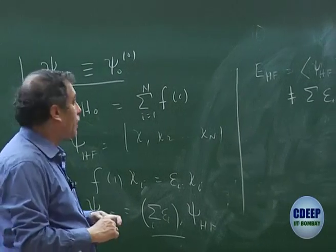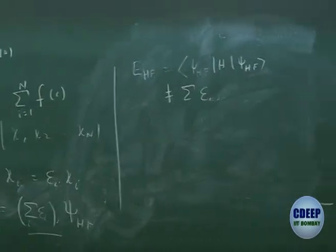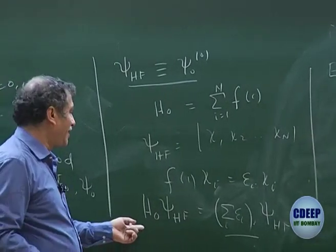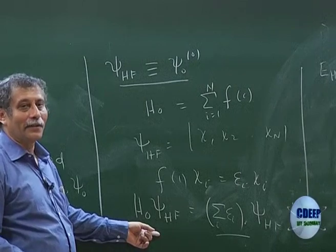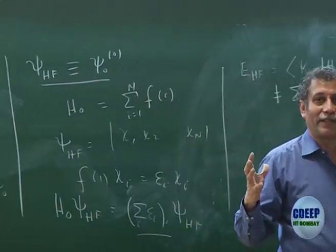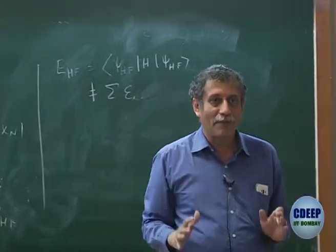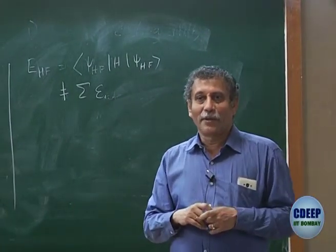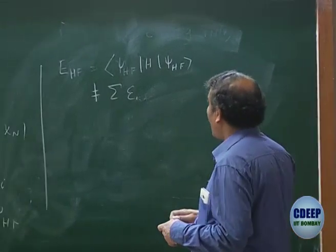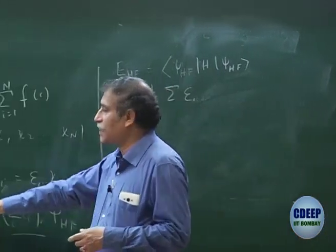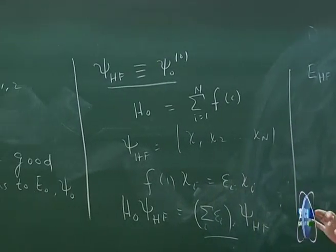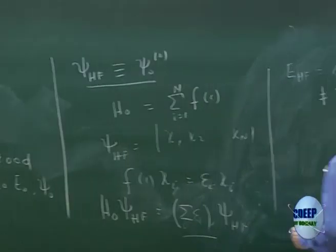So this is something that you must note, but I have no choice. You may wonder: can I get an H₀ whose eigenfunction is ψ_HF and whose eigenvalue is E_HF? That would be even better. I will come to that point — whether it is possible or not — because that would be even nicer. At this point, I have something which is not the Hartree-Fock energy, but let me start working with it first.